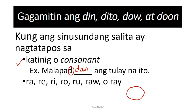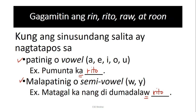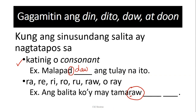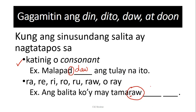Our example kanina — 'dumadalaw' — dahil hindi ito R, the answer is rito. Pero in this example, dahil ang sinusundang word is 'tama raw,' ang syllable starts with an R — raw — this becomes dito. Ang balita ko ay may tama raw dito. Or din. Or daw. Ngayon, dahil merong susundan na word, I would suggest na instead of dito, we use din. Ang balita ko may tama raw daw.